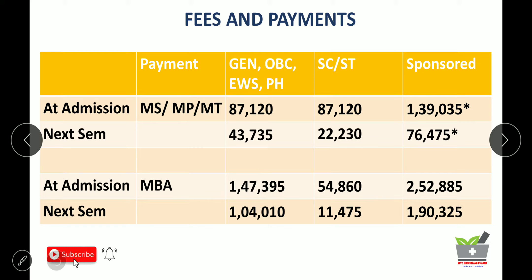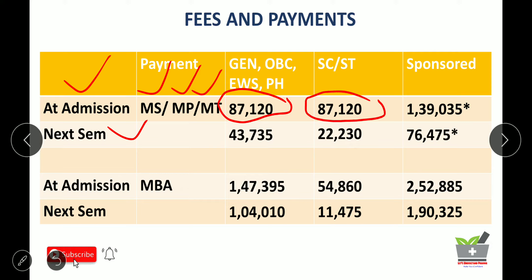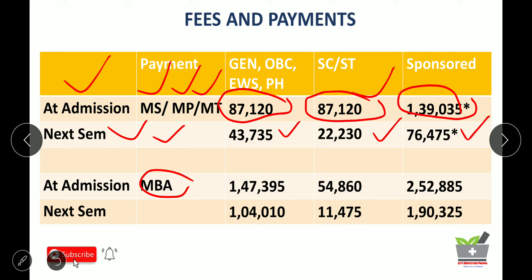Now let's talk about fees and payment. For MS, M.Pharm, and M.Tech programs: if you are a General, EWS, OBC, or PH candidate, you will pay approximately 87,000 rupees at the time of admission, and for SC/ST candidates it is around 66,000 rupees - please verify with the official NIPER Hyderabad brochure. Sponsored candidates pay approximately 1,39,000 rupees. For subsequent semesters, fees are approximately 43,000, 22,000, or 76,000 rupees depending on your category. For MBA, admission-time fees are 1,47,000 for general, 54,000 for SC/ST, and 2,52,000 for sponsored candidates.